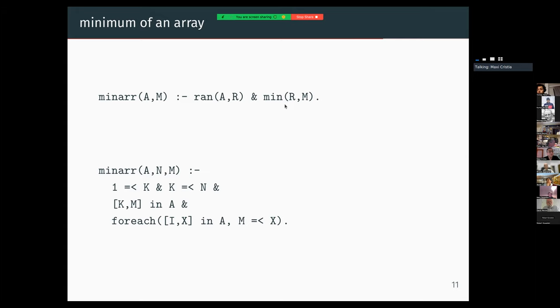We can also write the minimum of an array of dimension N using the foreach constraint. In that case, we establish the existence of an index K such that the ordered pair (K, M), which is the minimum of the array, belongs to the array. And foreach ordered pair in A, M is always less than or equal to X.